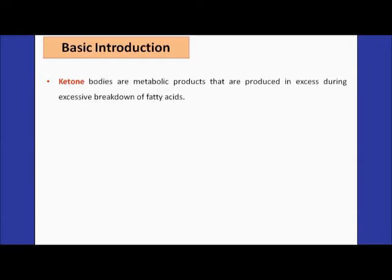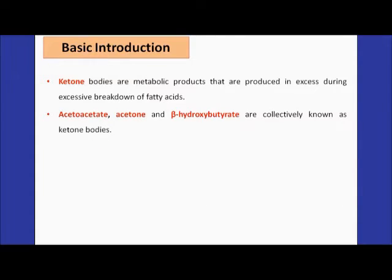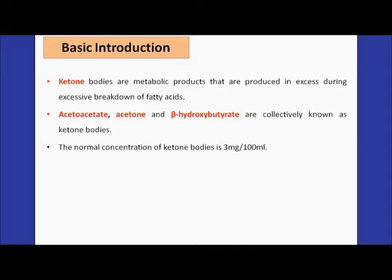Ketone bodies are metabolic products produced during the breakdown of fatty acids. The most commonly found ketone bodies in the human body are acetoacetate, acetone, and beta-hydroxybutyrate. The normal concentration of ketone bodies in human blood is 3 mg per 100 ml.